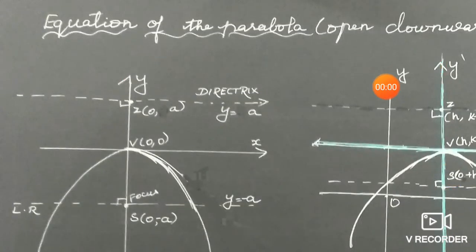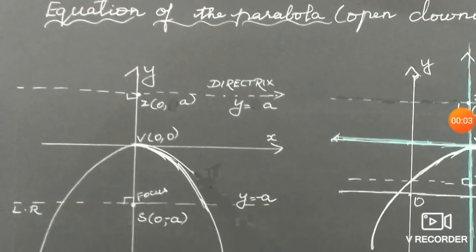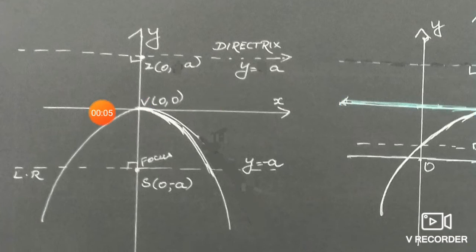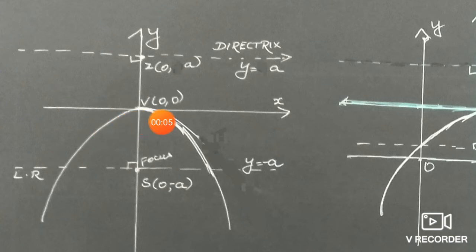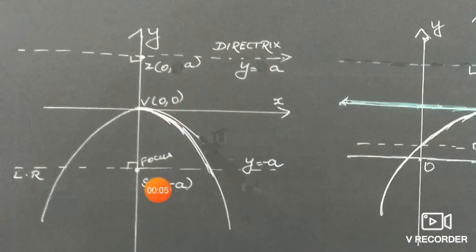Parabola opens downward. As usual, draw the x-axis and y-axis. The parabola opens downward, so we draw it like this. It must pass through the origin. The vertex is at (0, 0).